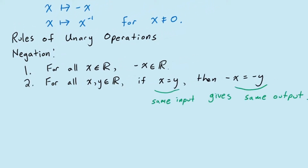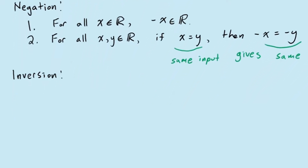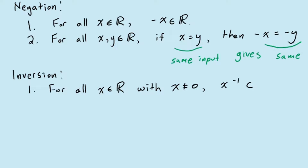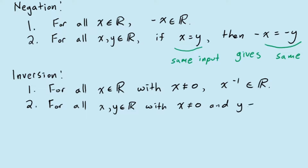The same properties are also true for the inversion operation, but we have to remember that inversion is only defined for non-zero real numbers. This means we have the first property that for any non-zero real number x, the inverse of x is also a real number. And second, the uniqueness property that given non-zero real numbers x and y, if x and y are the same, then x inverse will be the same as y inverse.